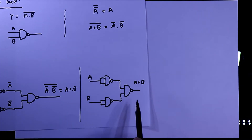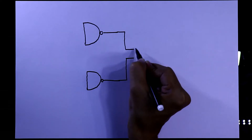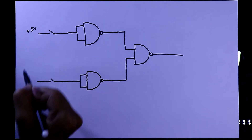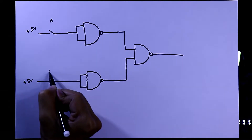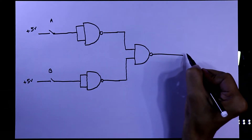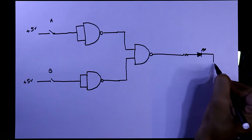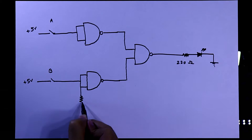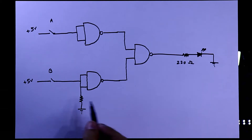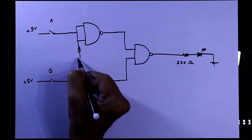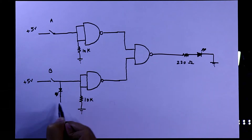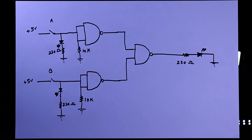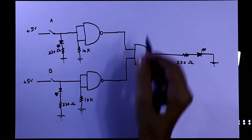As we need 3 NAND gates, we'll provide input using a switch. The other side of the switch is connected to +5V. This is switch A and this is B. To see the output we'll use an LED with a 220 ohm resistor. We also have to connect a pull-down resistor at the input — value is 10 kilo ohms. And to see the input I'm connecting an LED with a 220 ohm resistor. So this is the basic circuit diagram.